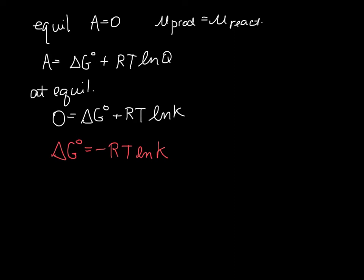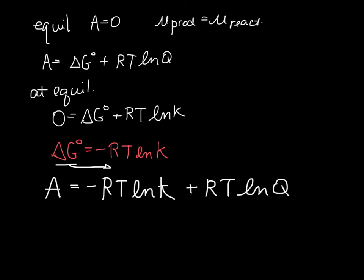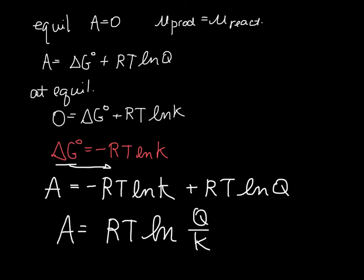We can do a little more rearranging. We can say that A equals negative RT·ln(K) — because that is an equivalent way to write delta G naught — plus RT·ln(Q), giving us A equals RT·ln(Q/K). So the affinity of our reaction, the difference in chemical potentials, is given by essentially the ratio of Q, which tells us about the current state of the system, compared to K, the equilibrium state.